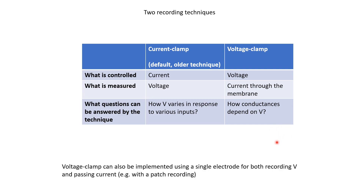In the voltage clamp setup we discussed, there was one recording electrode and one current-passing electrode, but both functions can be performed by the same electrode. One can do patch recordings in voltage clamp mode with just a single electrode — that requires some sophisticated electronic circuit design, but commercial amplifiers are now available that can achieve this.